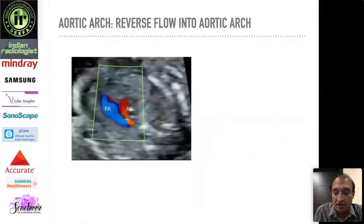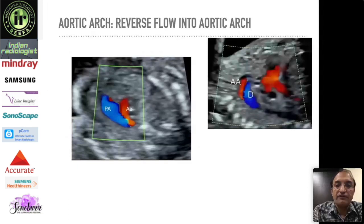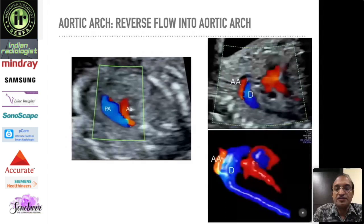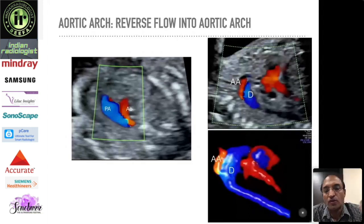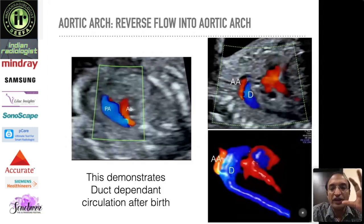On the three-vessel view in color of the same lesion, the pulmonary artery (PA) shows blue flow away from the heart, while the aorta (AO) shows retrograde flow — blood flowing back into the aorta through the ductus arteriosus. This signifies complete aortic valve atresia, with aortic flow entirely maintained by the ductus arteriosus. This is confirmed on the sagittal view of the aortic arch, where ascending aorta flow is entirely retrograde, indicating a critical ductus-dependent circulation after birth — the most extreme end of the spectrum.